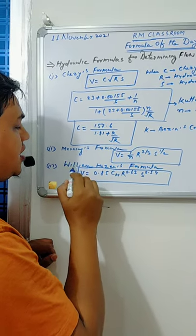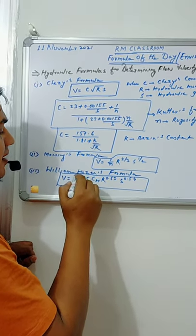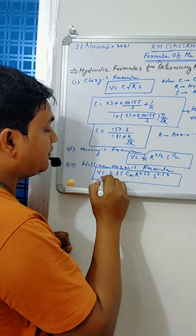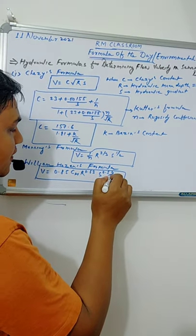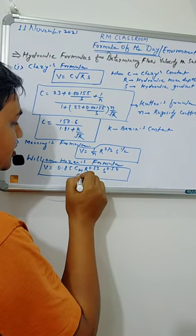This velocity can also be computed by William Hazen's formula. According to this, v is equal to 0.85 ch r to the power 0.63 s to the power 0.54, where ch is the Hazen's coefficient.